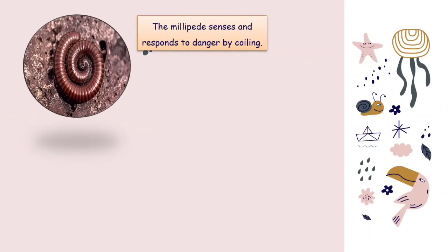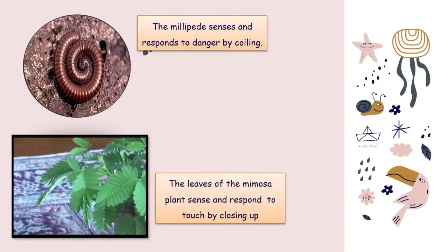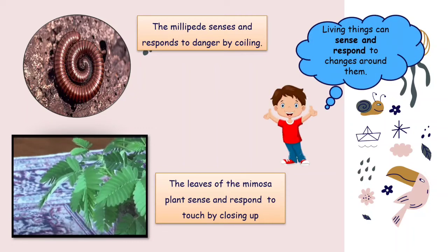The other example: the millipede senses and responds to danger by coiling. And this plant, the leaves of the mimosa plant sense and respond to touch by closing up. In conclusion, living things can sense and respond to changes around them.